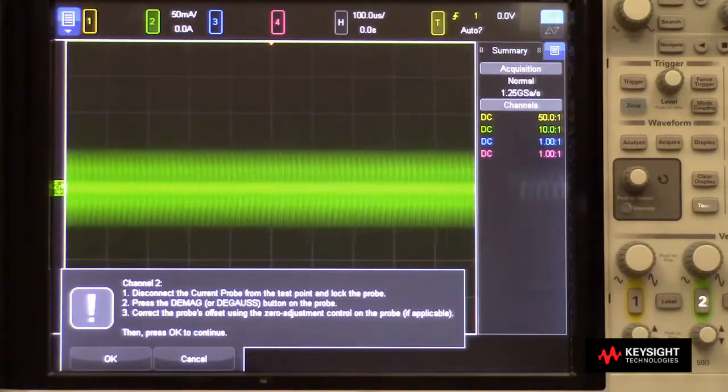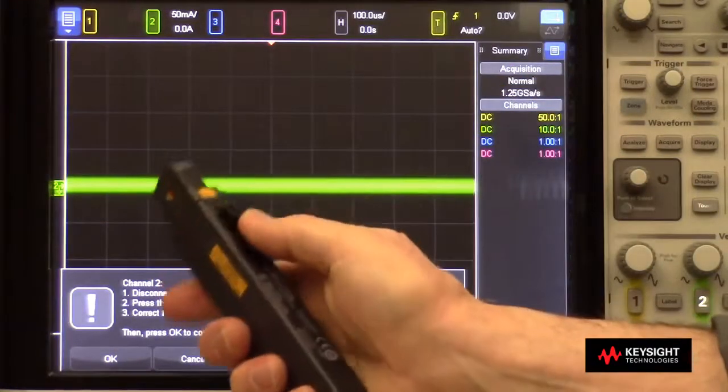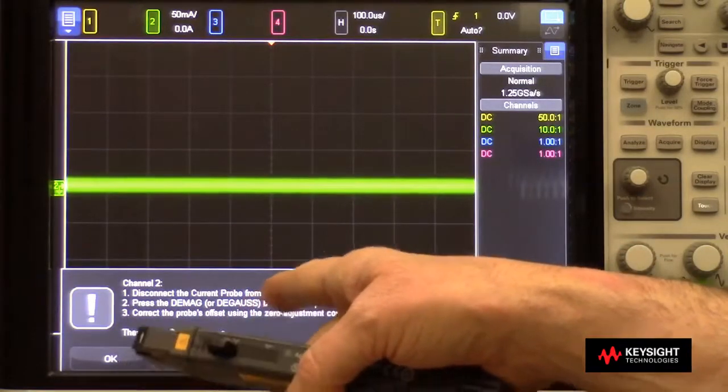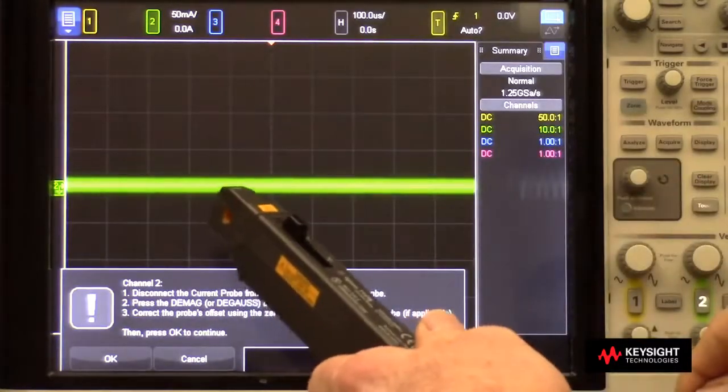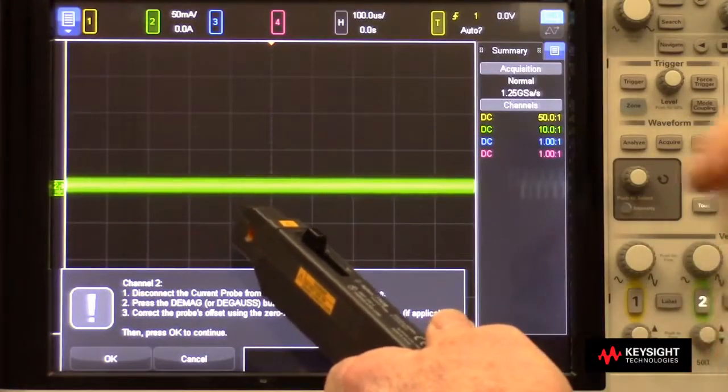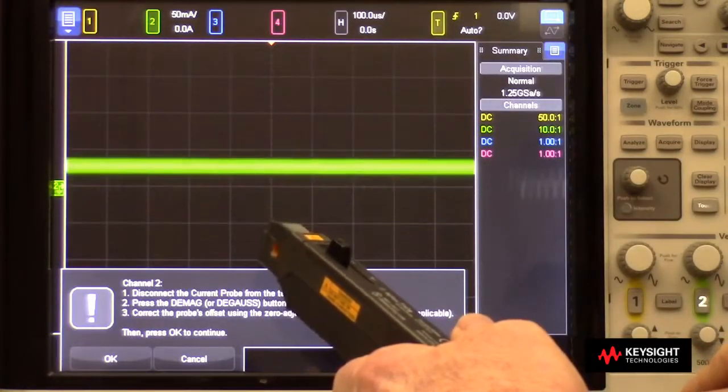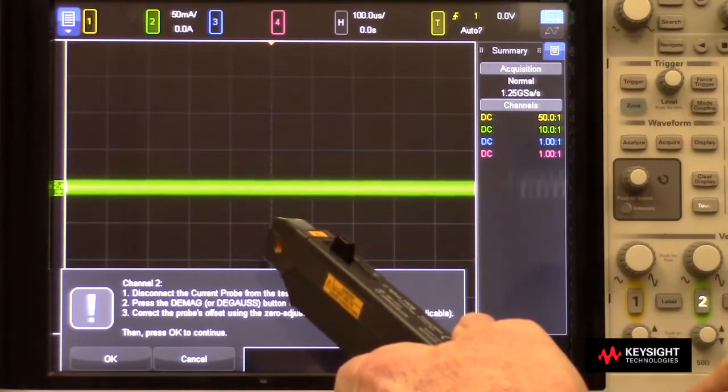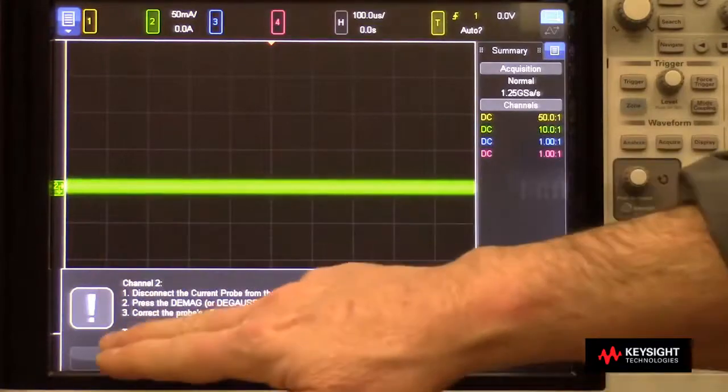Next, it tells me to disconnect my current probe, which you can see here, lock it, and then it says to press the DMAG button or sometimes called a degauss button on the probe. I'll do that because the probes can build up a field on them. And then I can also manually adjust the offset. So I'll get it as close to the ground indicator as possible, but it still may not be precise. I'll press OK.